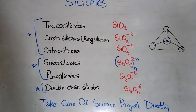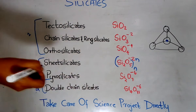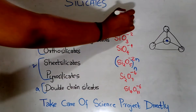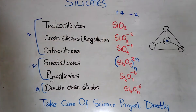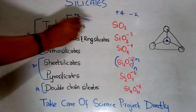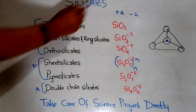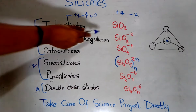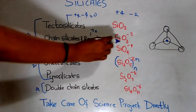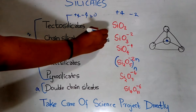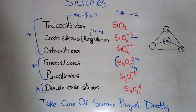I hope you all know how to calculate the charge. Silicon has a charge of +4, and oxygen has a charge of −2. You just add these two contributions together to get the overall charge. For example, for tectosilicates: +4 for one silicon, and 2 × (−2) = −4 for two oxygens, giving a net charge of 0 — so no charge. For chain or ring silicates: +4 for one silicon, and 3 × (−2) = −6 for three oxygens, giving +4 − 6 = −2. This is how we calculate the charge.